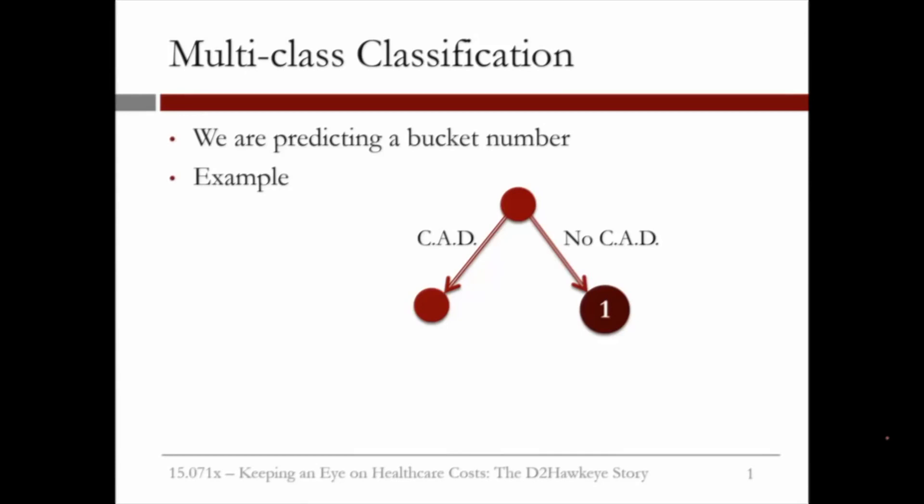Let us introduce the method we used for predicting the bucket number. It is a method called classification and regression trees. In this case, we use multi-class classification. There are five classes: buckets one to five.